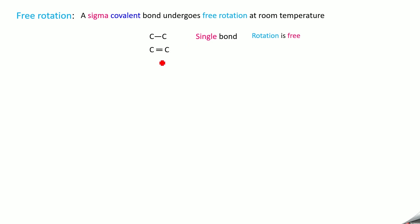But if you take a molecule where you have a double bond, the rotation is restricted. Whenever you have a restricted rotation, geometrical isomerism is possible — I have discussed this in the earlier video, I will give the link in the description box. Whenever you have free rotation between a carbon-carbon single bond, conformational isomerism is possible.